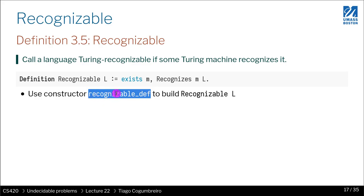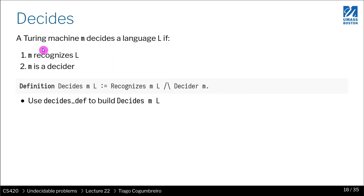So it's just so you know that in the Turing library, underscore def always means the constructor of what comes before. So underscore def constructs recognizable. So similarly, now we are ready to introduce the sides.